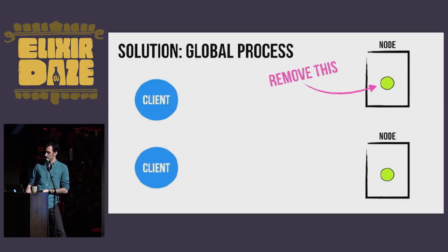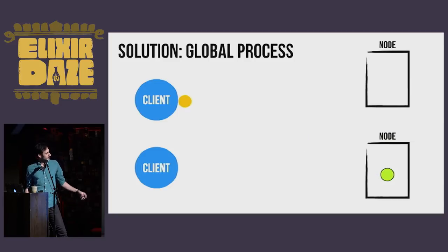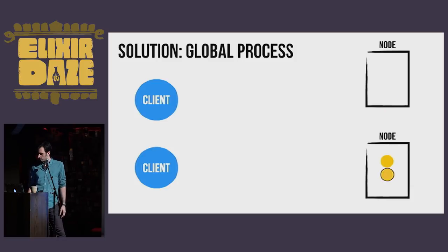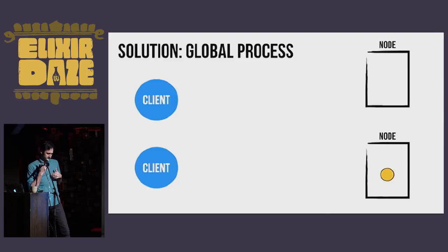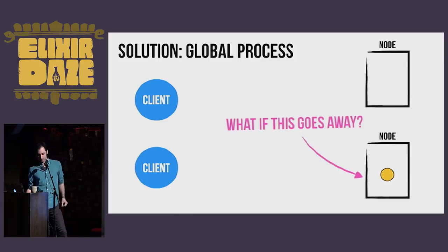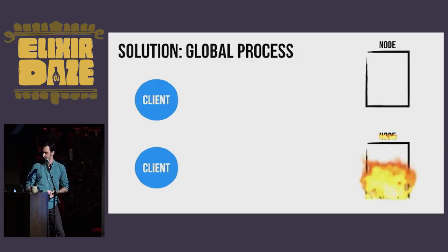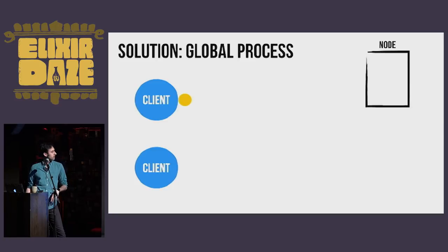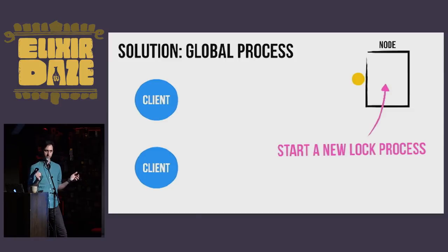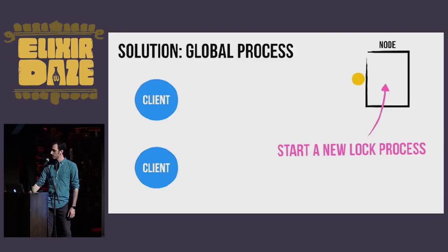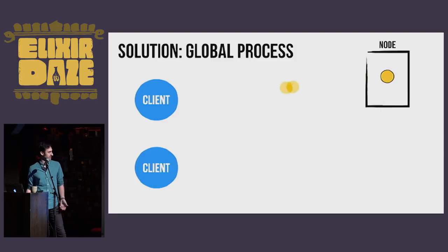So we'll go back to our example, remove this, mark it as global. Now if a client sends a message to the top node, it can be looked up and forwarded on to our lock, and we send that back out to the client. That seems to work really well. Of course, the next obvious question is: what happens if that node goes away? What do we do if this whole thing just burns to the ground? We'll send a message to the first node, see there's no lock process in the cluster, so let's just start one. That way we'll be in a good state and can get access to our resources again.